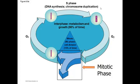During the S phase, each individual chromosome turns into two — there are two copies of it. From here, the cell goes through G2, basically the second growth phase, where it starts making more cell and more organelle parts in preparation for mitosis, just to make sure it has everything it's going to need to eventually become two cells.